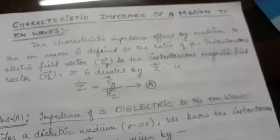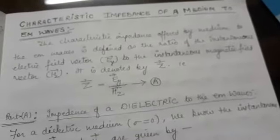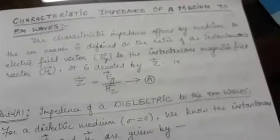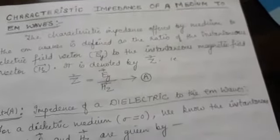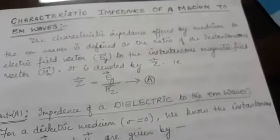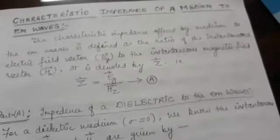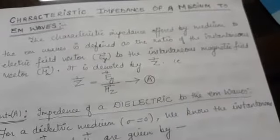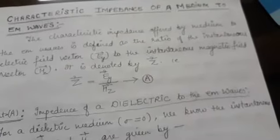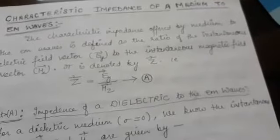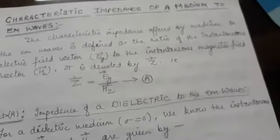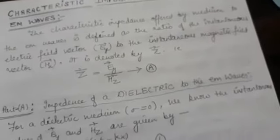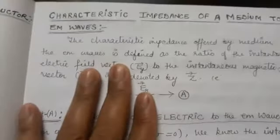Good evening, dear students. In my last video, I discussed the behavior of electromagnetic waves through conductors and defined the skin depth. In the current topic, we will define the characteristic impedance of a medium to electromagnetic waves and then discuss further details for dielectrics as well as conductors.